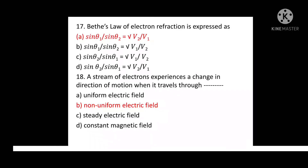Question No. 18: A stream of electrons experiences a change in direction of motion when it travels through? Option A: Uniform Electric Field. Option B: Non-Uniform Electric Field. Option C: Steady Electric Field. Option D: Constant Magnetic Field. Correct answer is Option B: Non-Uniform Electric Field.